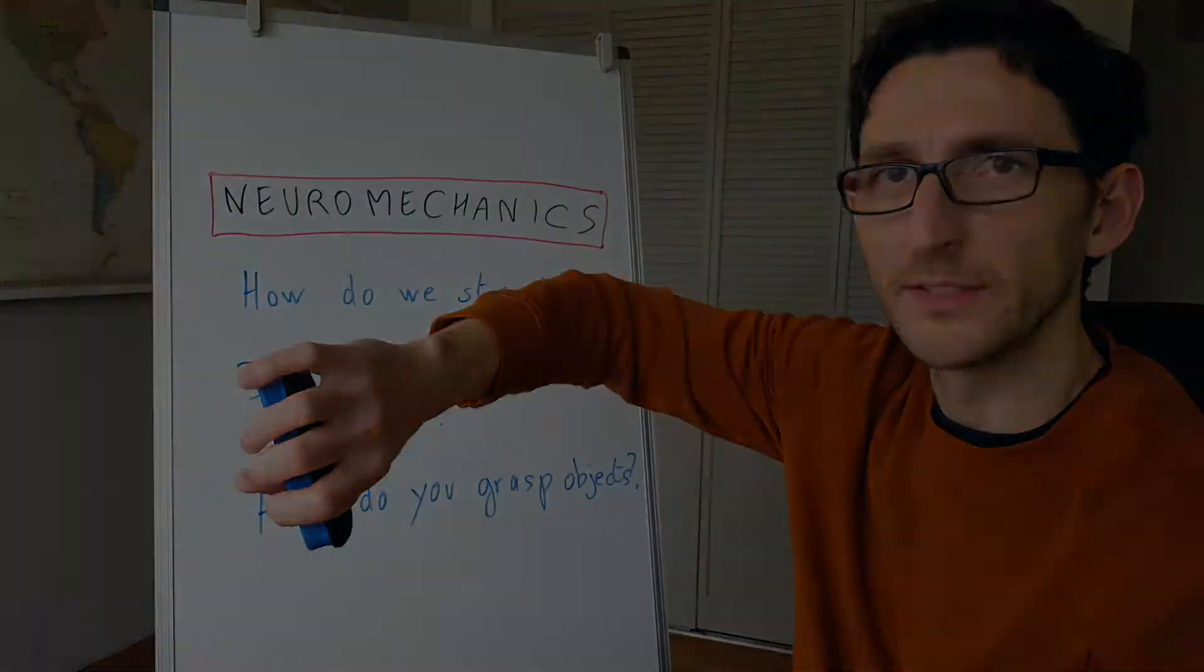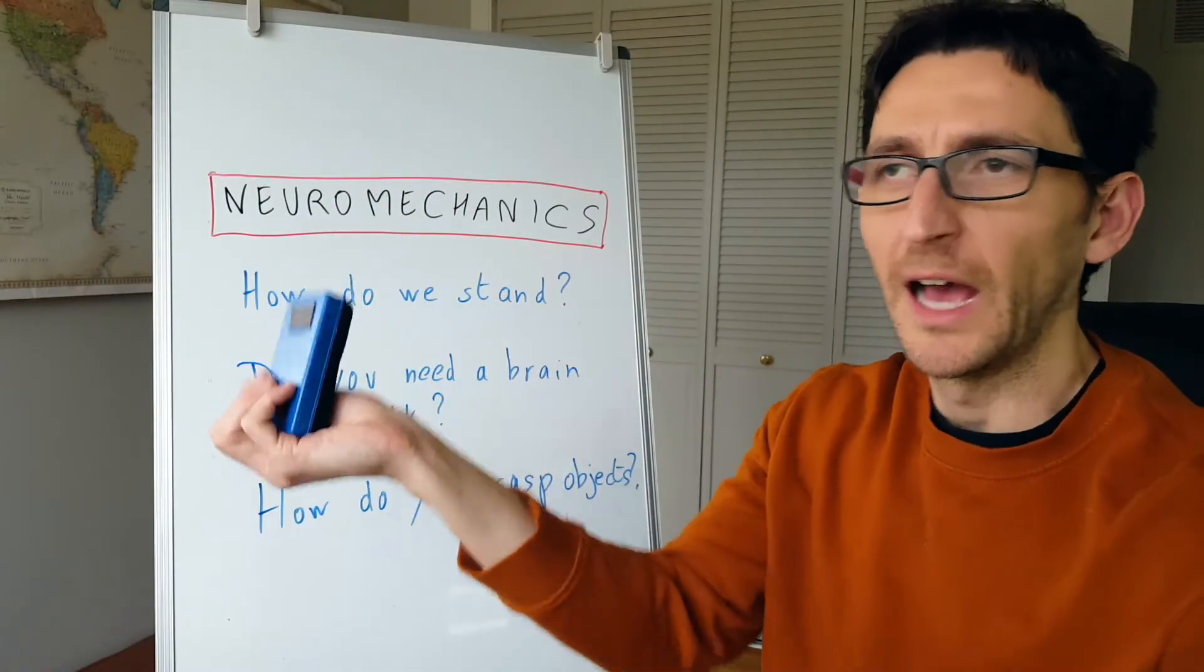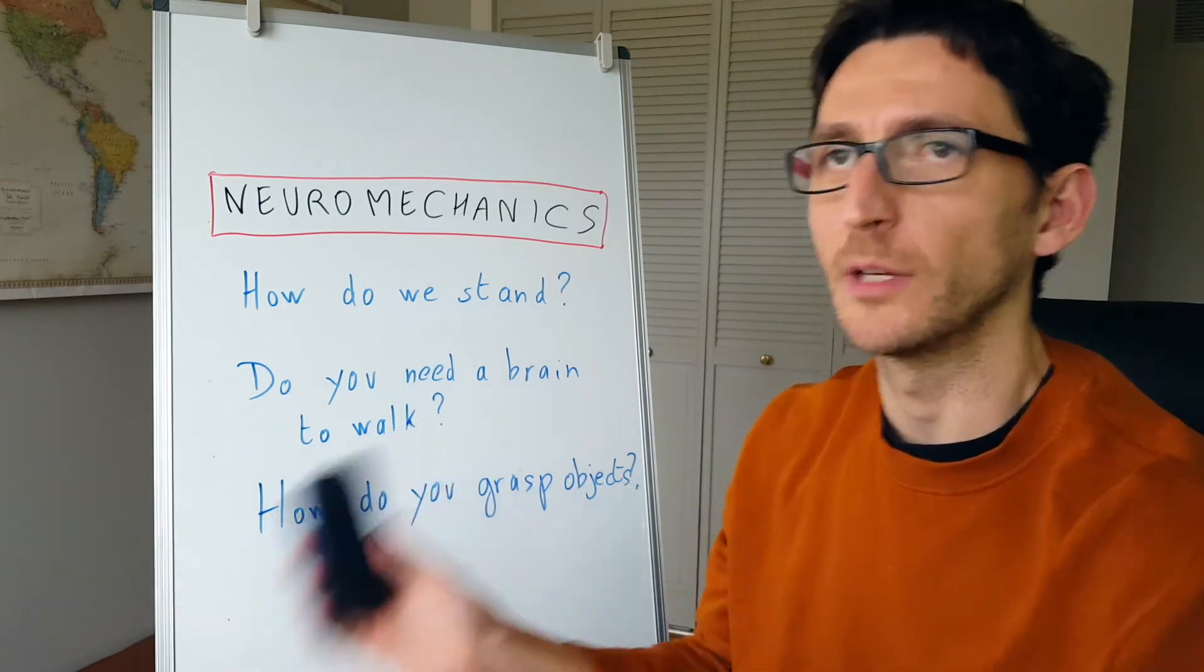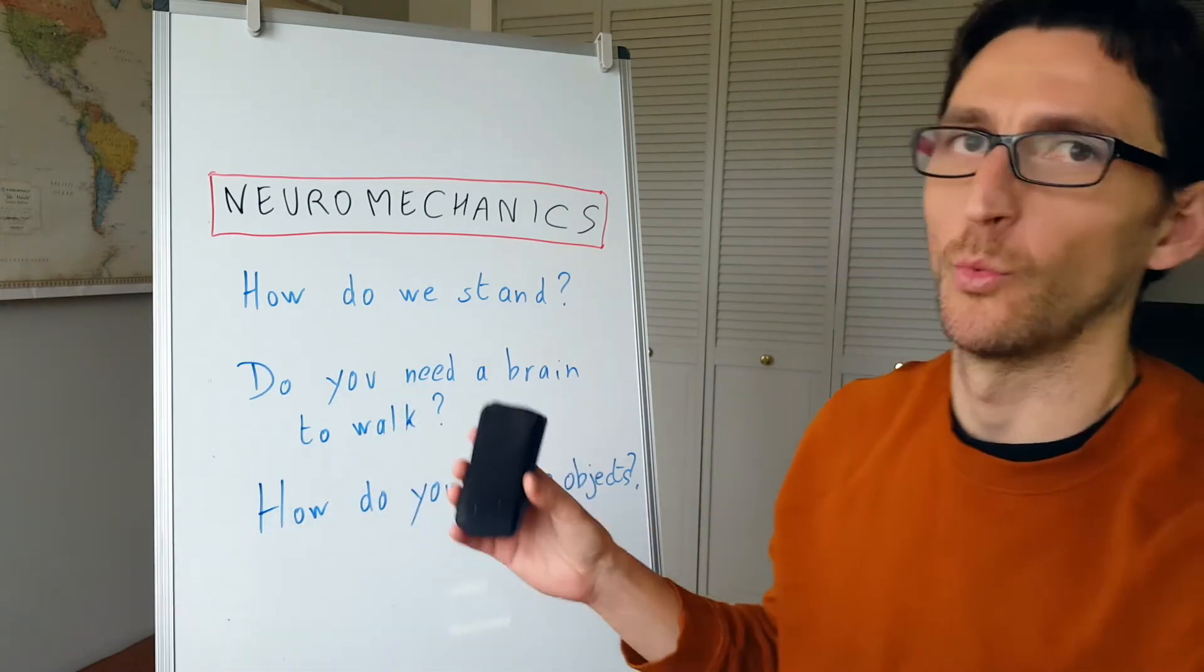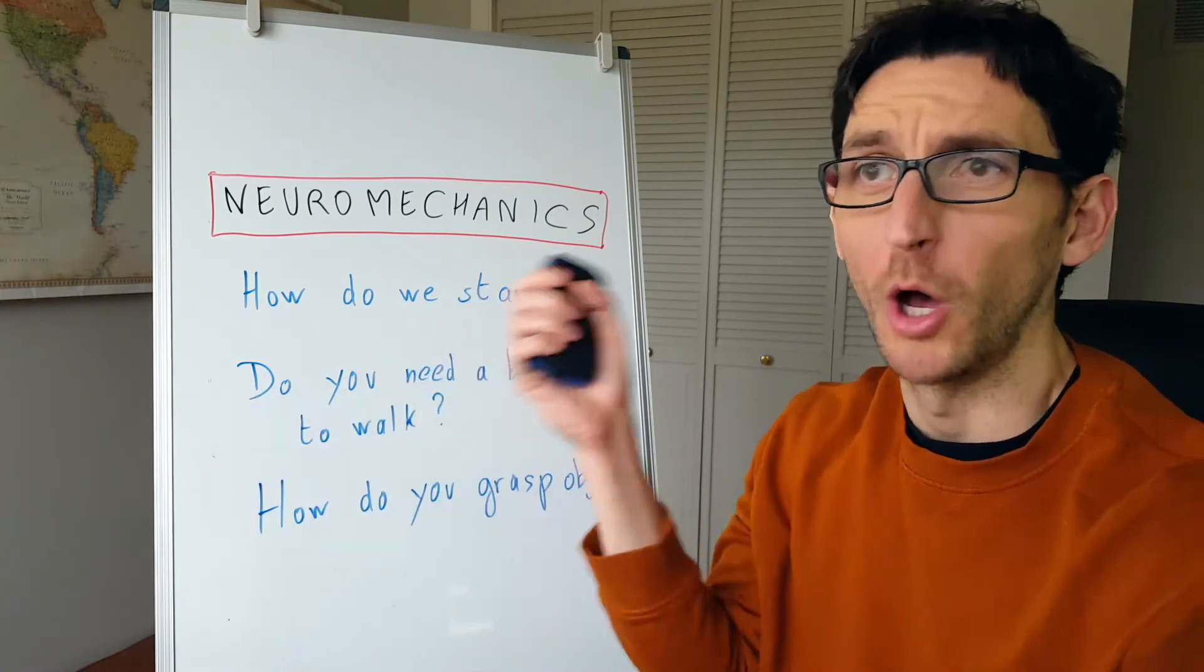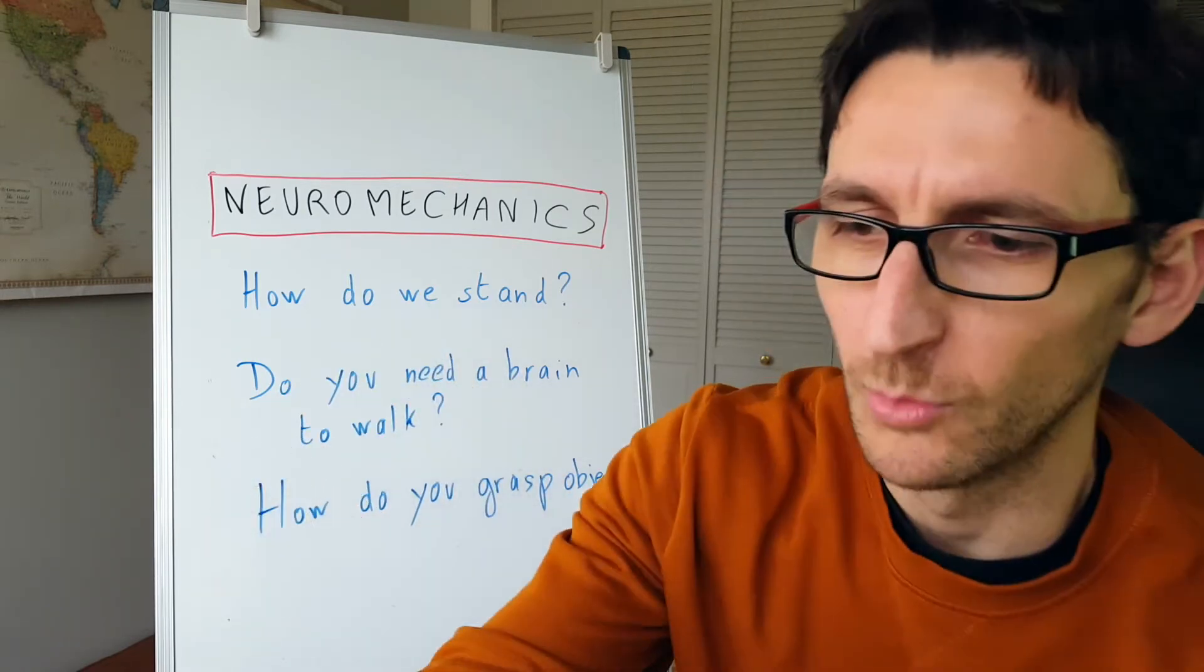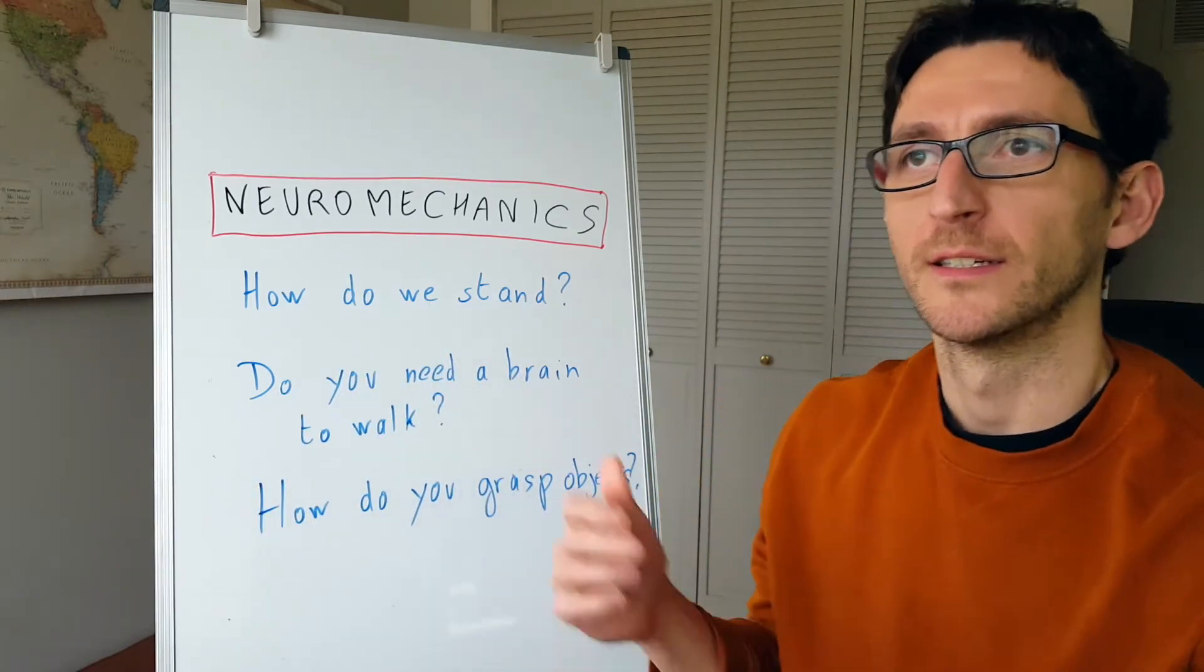But really, you have multiple ways. I could also do this. I could also do that. Do this. Do this. I can grasp and reach for an object in many, many different ways. Why do you decide that this is maybe the most optimal way in this particular situation? This is what neuromechanics can tell.